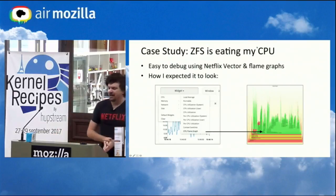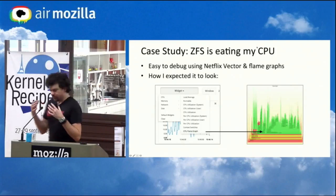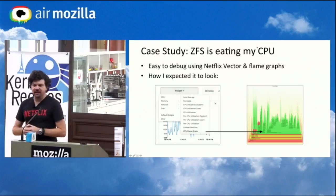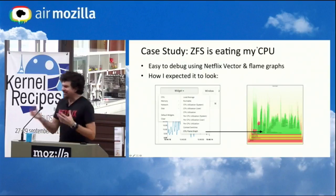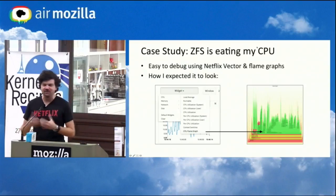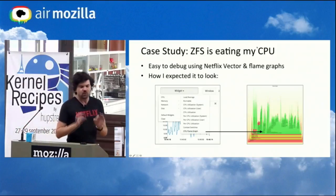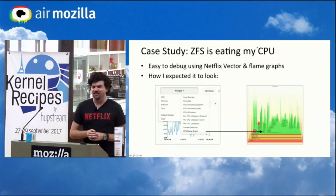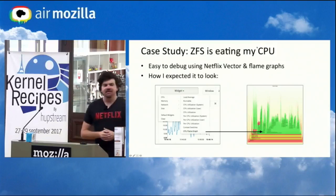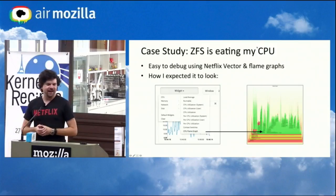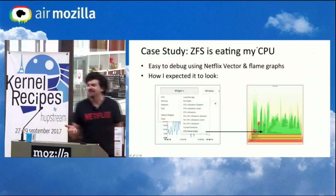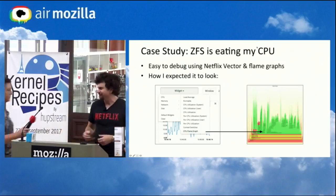I'll start with a case study, and that is ZFS. Some staff on the Netflix cloud for a microservice said that ZFS on their instances was eating a lot of CPU. As a performance engineer, I get asked lots of different issues. This was surprising — I worked on ZFS and I'm very familiar with the code paths, and the way we configure it at Netflix, ZFS on Linux, there's no way ZFS can eat 30% of CPU.